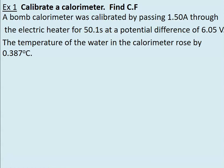At a potential difference, so the voltage, so you put your V, I, t. The temperature of the water in the calorimeter rose by this amount, so we want to know our calibration factor. Calibration factor is how many joules for every degree.